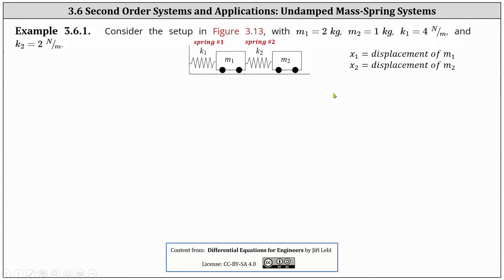We're asked to consider the setup in figure 3.13 with mass one equal to two kilograms, mass two equals one kilogram, spring constant k one equals four newtons per meter, and spring constant k two equals two newtons per meter. We'll also let x one equal the displacement of mass one and x two equal the displacement of mass two.